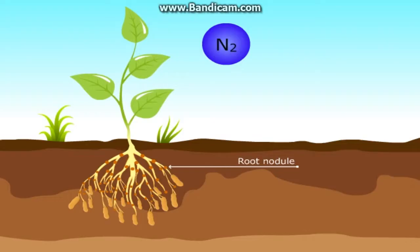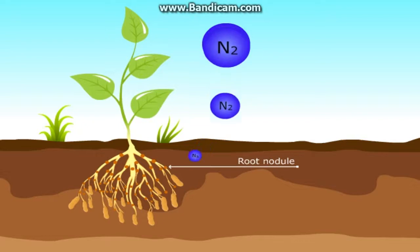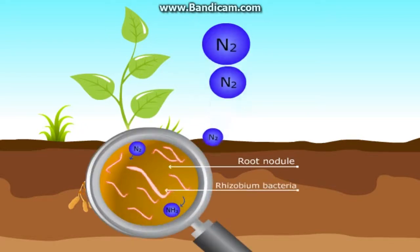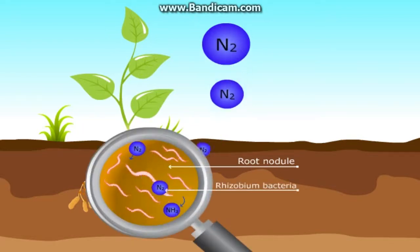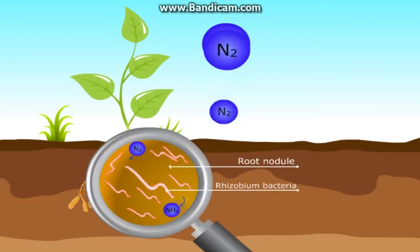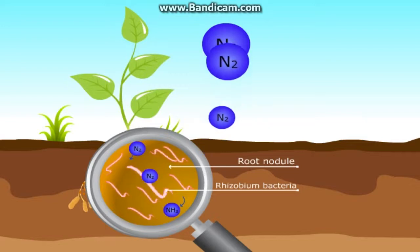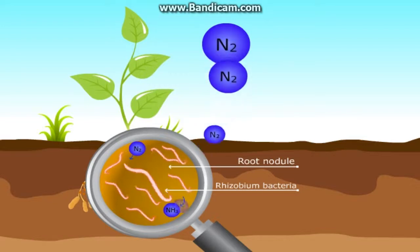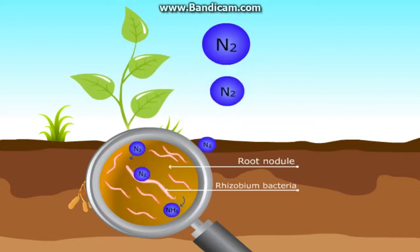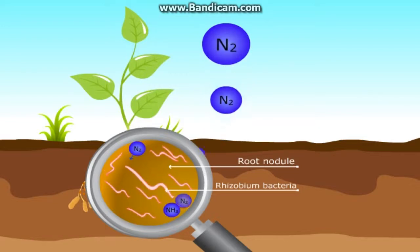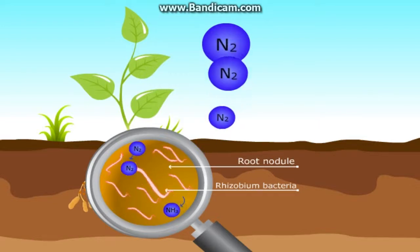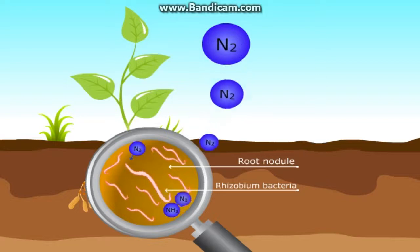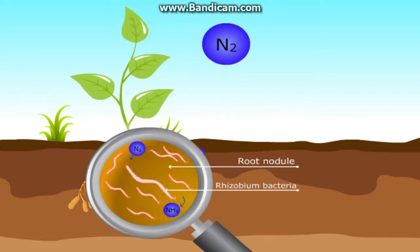Nitrogen-fixing bacteria, like Rhizobium, are found in the roots of some dicot plants, such as legumes. These are present in special structures called root nodules.